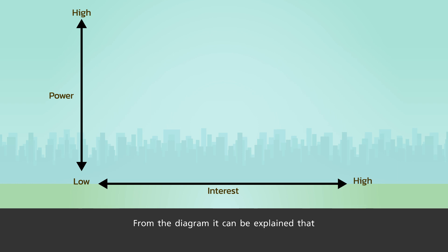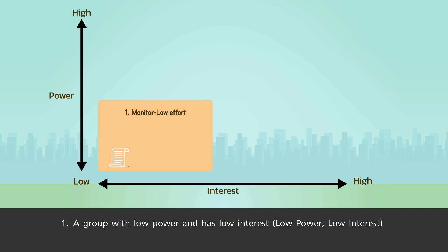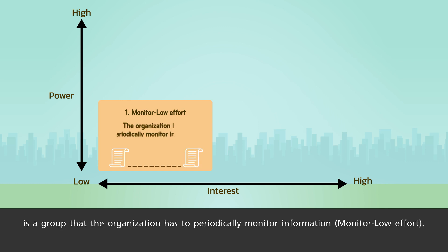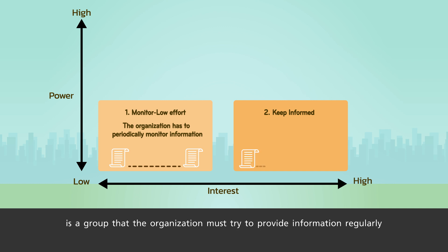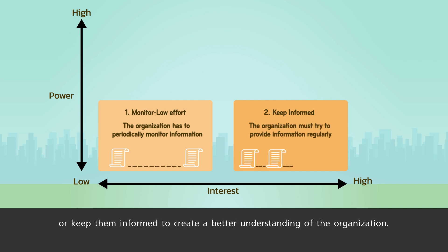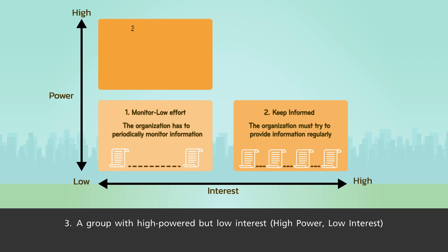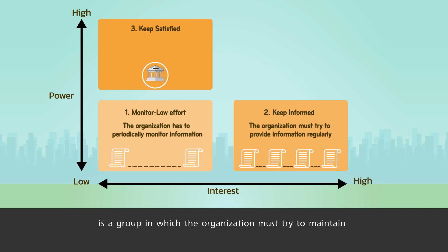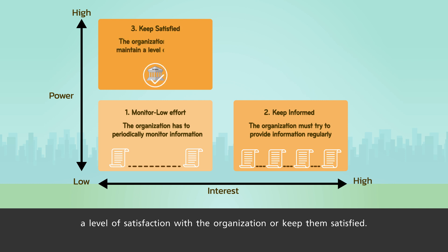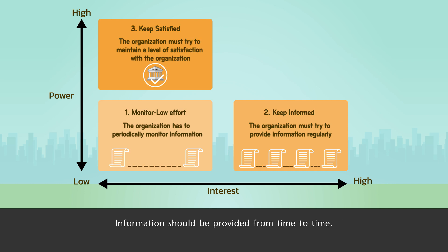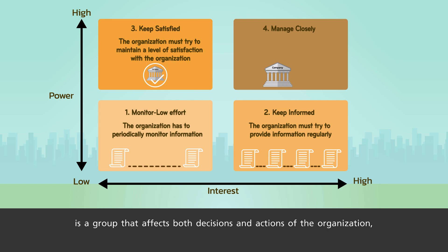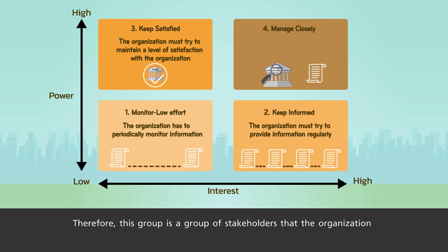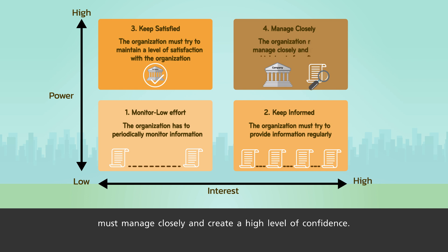From the diagram, the four groups can be explained as follows: 1. A group with low power and low interest is a group that the organization needs to periodically monitor. 2. A group with low power but high interest is a group the organization must keep informed regularly to create a better understanding. 3. A group with high power but low interest is a group the organization must keep satisfied, providing information from time to time. 4. A group with high power and high interest affects both decisions and actions of the organization; therefore, the organization must manage this group closely and create a high level of confidence.